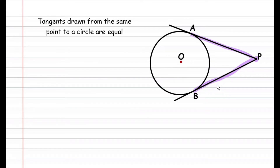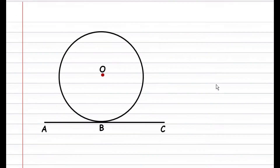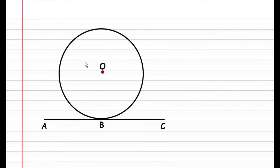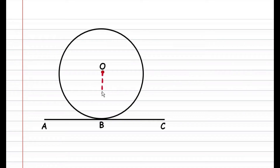In order to prove this theorem we're going to use another theorem. That theorem states: if we have a circle and a tangent — remember a tangent is a straight line that touches the circle at only one point — the line drawn from the center of the circle to the tangent at the point of contact is always perpendicular to the tangent.